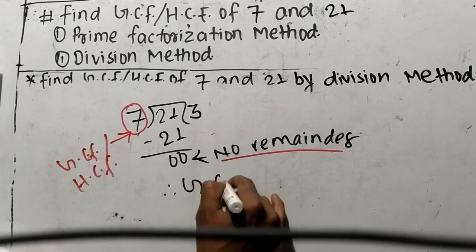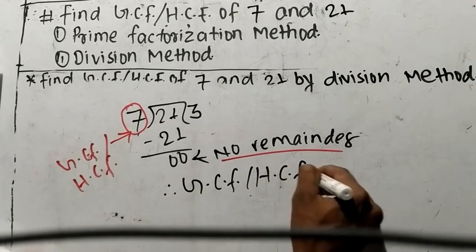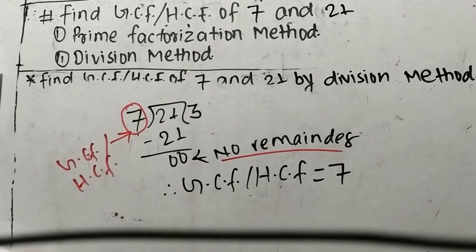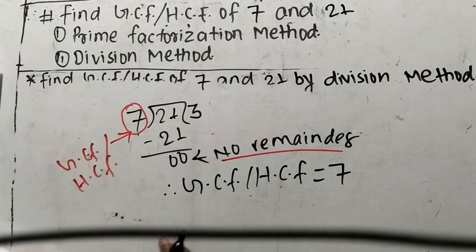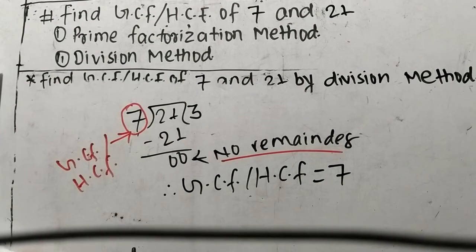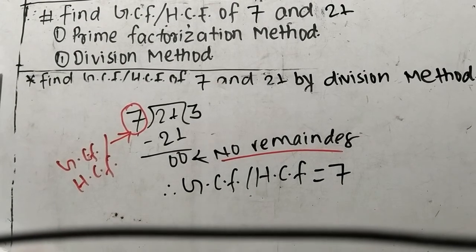Therefore, we can write GCF or HCF is equal to 7. In this way we can find out GCF by division method. This much for today — if you have any question from math, just comment your question below and we shall provide a video solution of your question. Thank you.